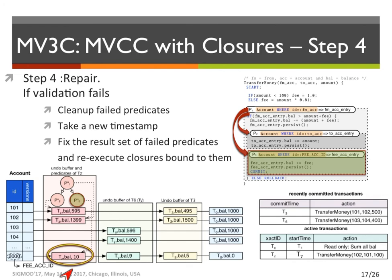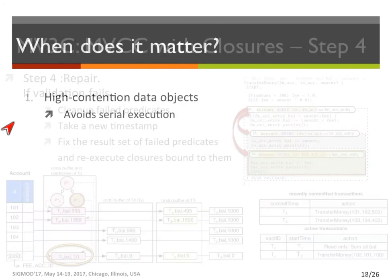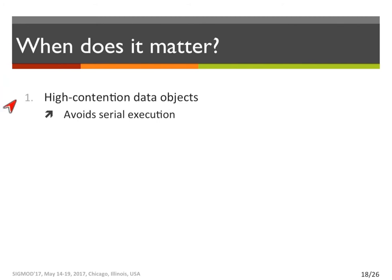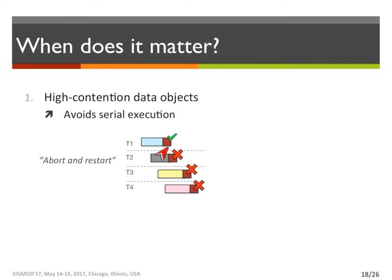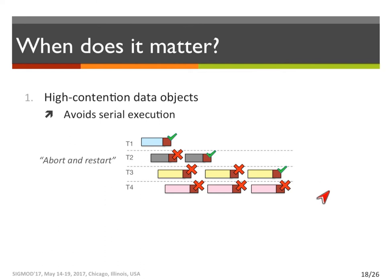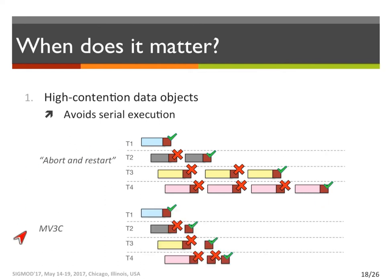Now that we have a transaction repair mechanism, let's see why it's beneficial. MV3C matters the most in two main scenarios. The first scenario is when we have high-contention data objects. When almost all transactions alter a high-contention object, then among even thousands of concurrent transactions, only one can succeed validation, which leads to serial execution. In the abort and restart approach, if four transactions run concurrently, the first one succeeds validation and the rest fail, and when they restart the same thing happens again. However, using MV3C, instead of running the whole transaction again, we only have to repair a potentially small portion, thus partially solving the issue.